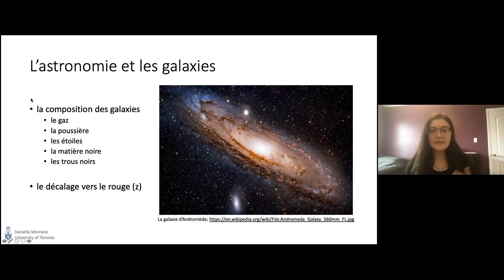L'Univers est composé de nombreux objets composés de poussières, de gaz, de matières noires, de trous noirs et de millions d'étoiles. Les galaxies sont certains des plus grands objets cosmiques observés dans l'Univers.